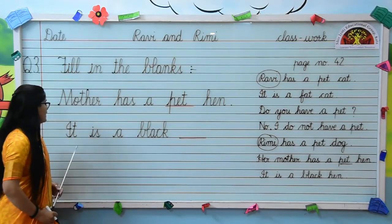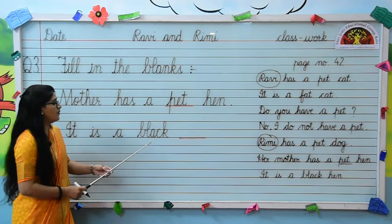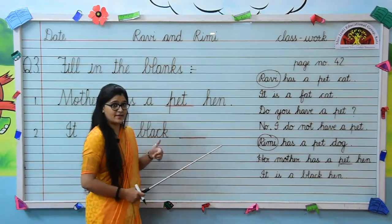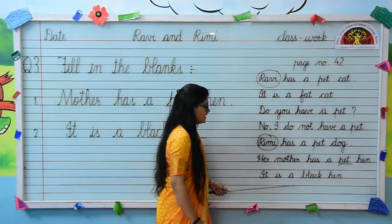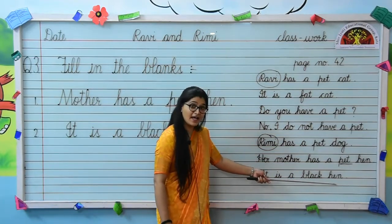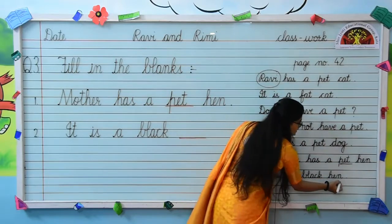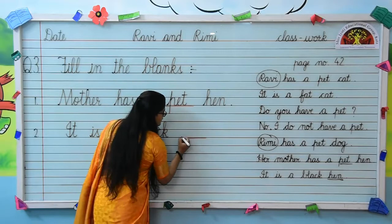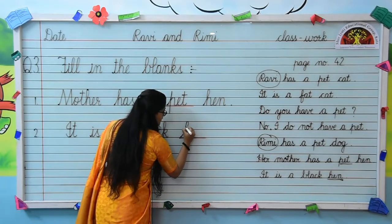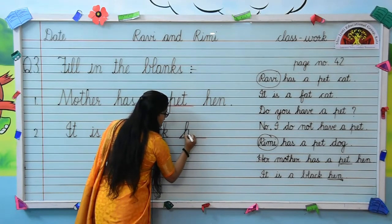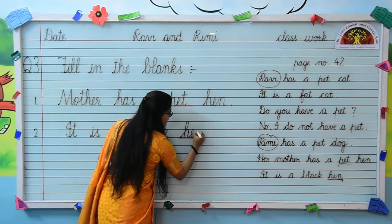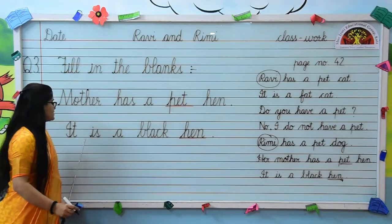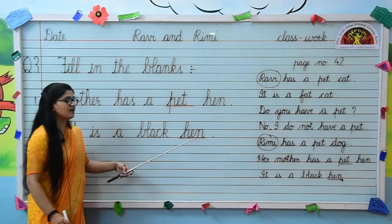Now move to the next fill-up. It is a black blank. Whose color is black? We read, right? Yes, it is a black hen. So on the place of blank, we will write hen. Small cursive H-A-N, hen. It is a black hen.